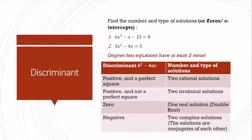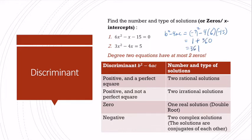Let's find the number and type of solutions for our first example by computing b squared minus 4ac. That would be negative 1 squared minus 4 times 6 times negative 15. I get 1 plus 4 times 6 times 15, which is 360. So my discriminant is 361. The two negatives became positive. 361 is not a perfect square, but it is positive, so I'm going to have two irrational solutions.